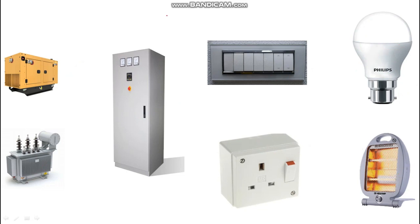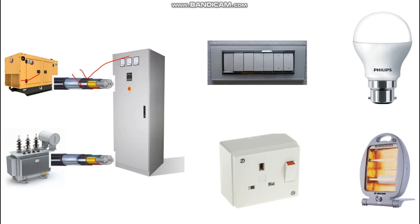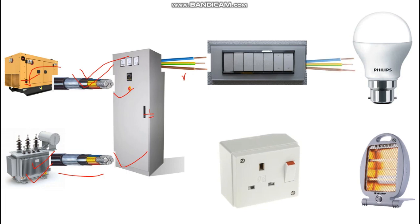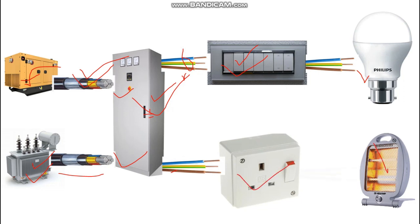So how does power actually transfer or reach these devices? The main medium is the cable. This cable will take power from the DG and feed it to the panel. Similarly, power transfers from the transformer to the panel through this cable, and from this panel to the switchboard through another cable. So cables keep the path to transfer power from one device to another — from panel to switchboard, then to the bulb, or from panel to power socket, then to the electric heater.